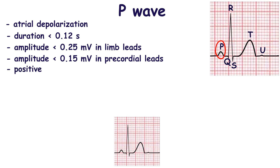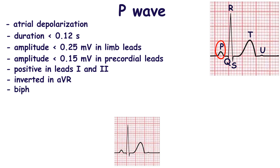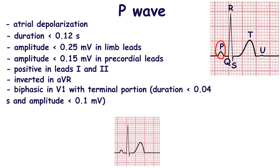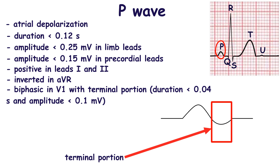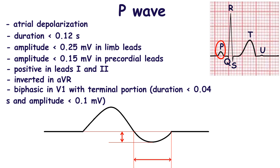The normal P wave is upright and monophasic in leads 1 and 2. It is inverted in lead AVR. Normally, the P wave is biphasic in lead V1, but its negative deflection is less than 0.1 mV.